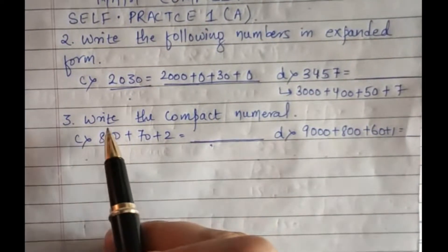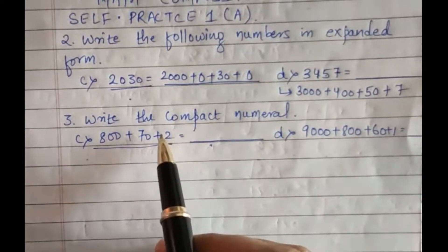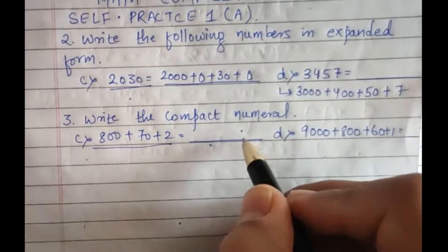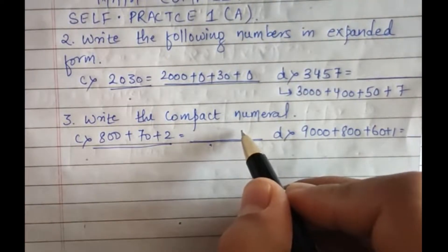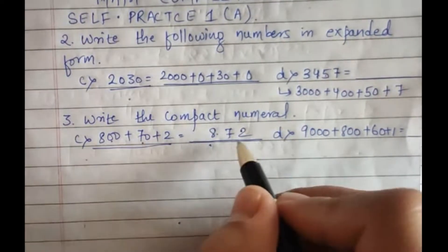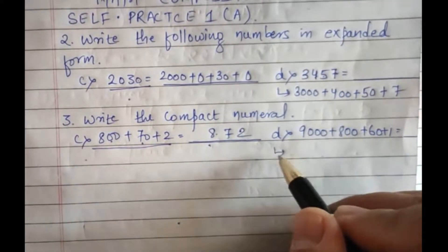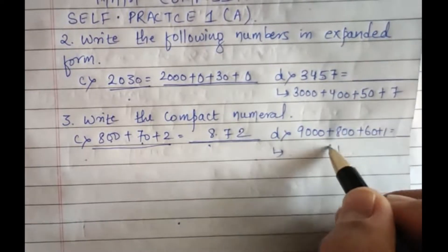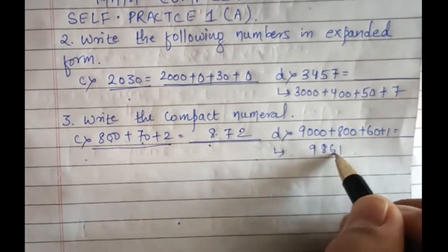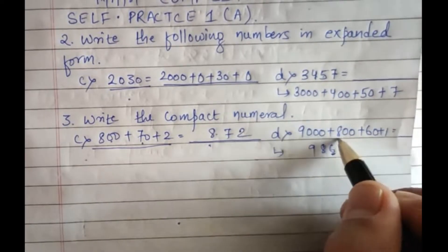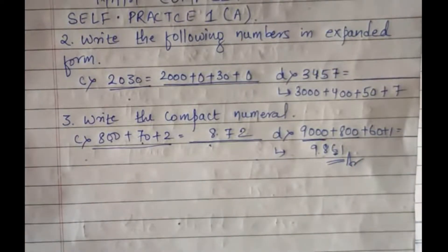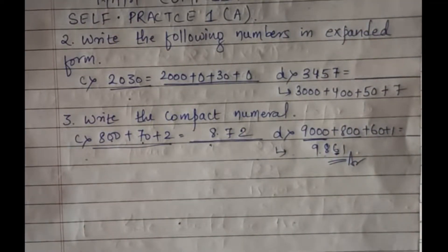The next question was to write the compact numeral — the number is given in expanded form and you have to write it in compact form. Starting from the ones digit: seven, then eight — ones, tens, hundreds — so eight hundred, seventy, and two gives us the compact form. For example, 1689 written in ones, tens, hundreds, thousands becomes 9861 in compact form.